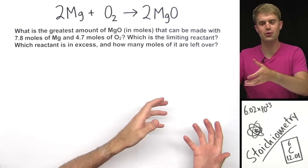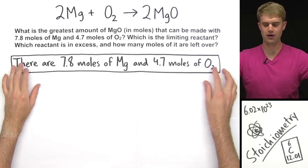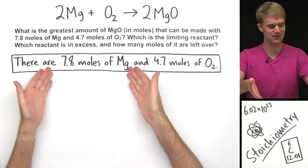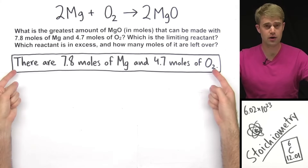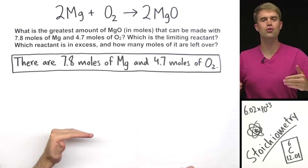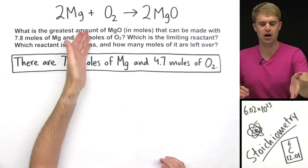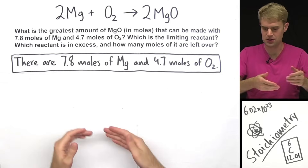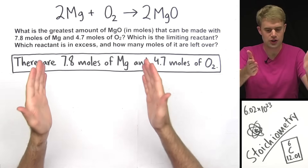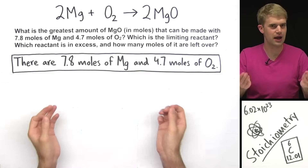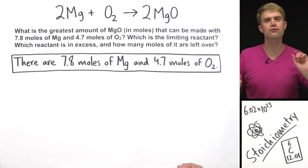This problem is all about moles — how many moles of this do we have, and how many moles of this can we make? We have 7.8 moles of Magnesium and 4.7 moles of Oxygen. This is what we're starting with, and we'll keep referring back to this information throughout the problem. To find the greatest amount of Magnesium Oxide we can make, we first need to figure out which of these two is the limiting reactant — is it Magnesium or Oxygen? To do that, we're going to ask a few questions.